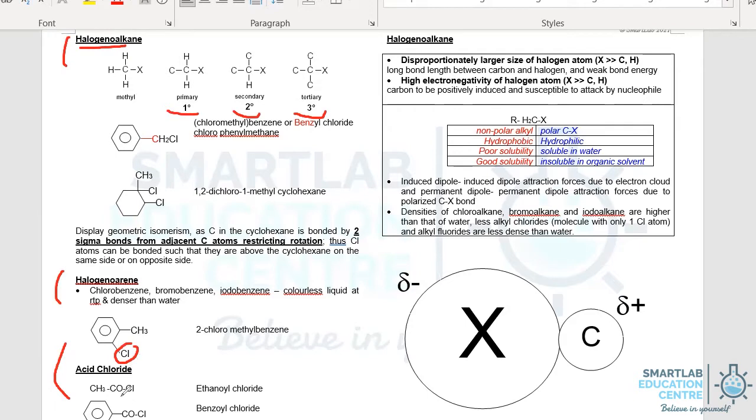And finally, when you come to acid chloride, you actually have a COCl. That is something we'll learn later, subsequently much later in carboxylic acid.